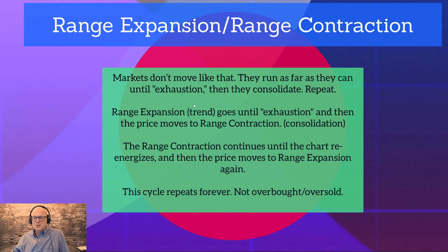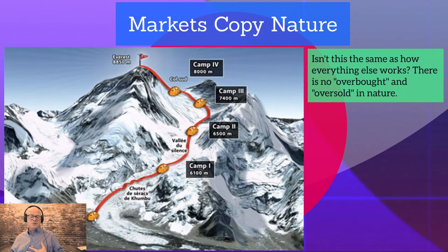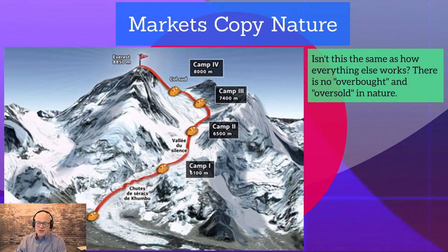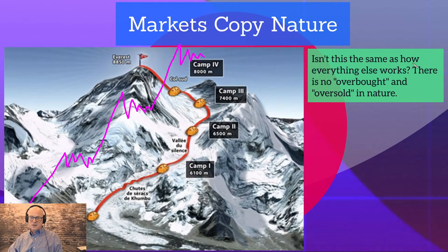Markets copy nature. How do we summit Everest? We start at base camp, acclimate to the oxygen, climb to camp one — range expansion. Sometimes people can't acclimate; they go back down — that's a pullback. They stay at camp one for three days — range contraction. Then range expansion again up to camp two, spend three days there. Then camp three, camp four, then eventually go for the summit. This is how markets move: range expansion, range contraction, range expansion, range contraction — same thing over and over again.